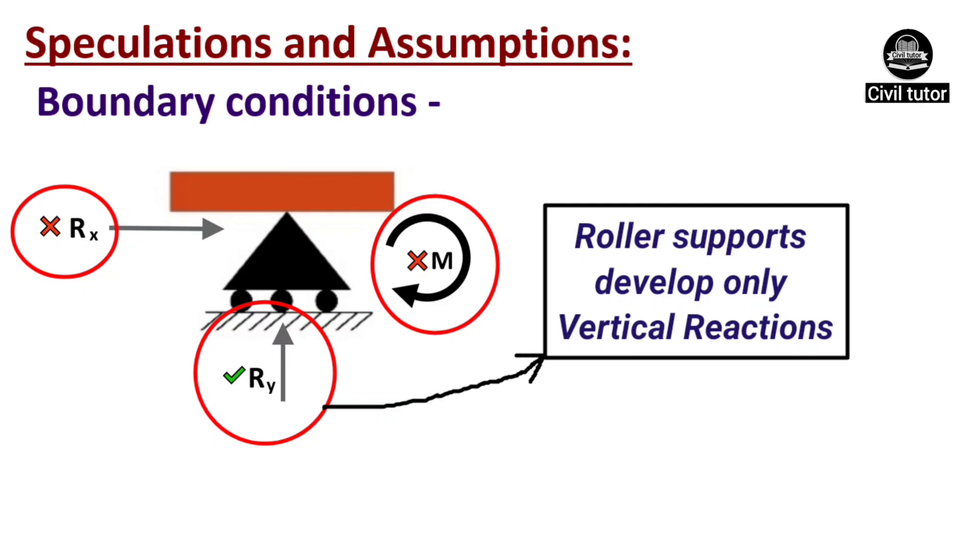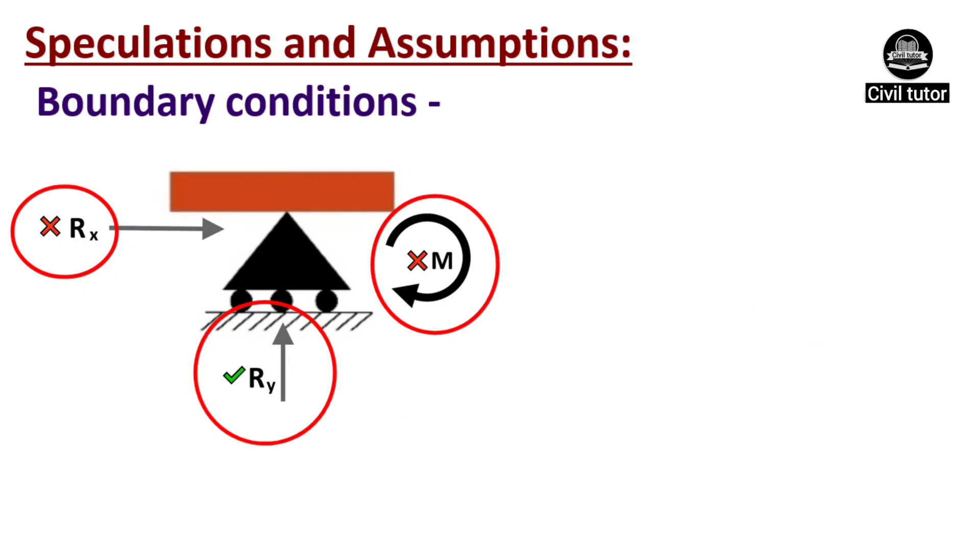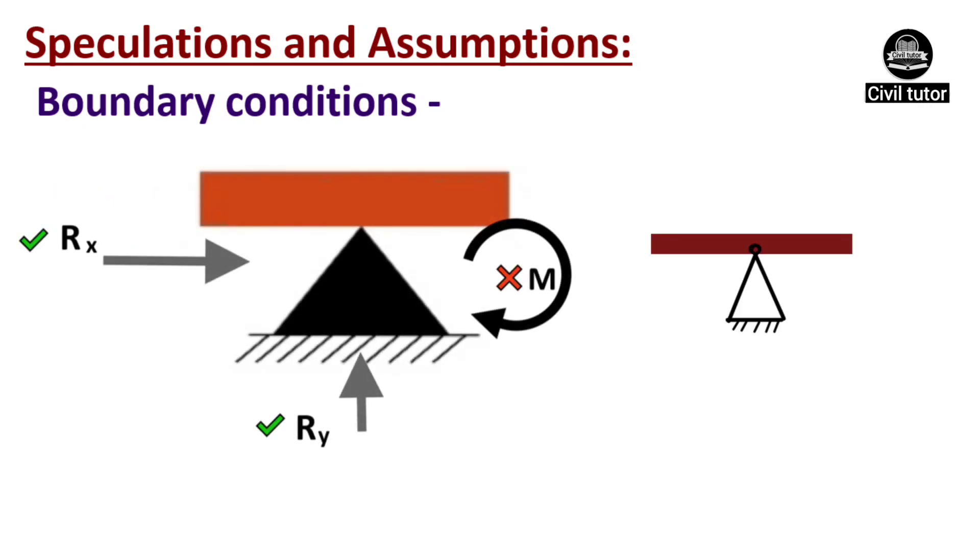The member having a hinged support is not capable of moving linearly in any direction but can rotate freely.